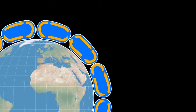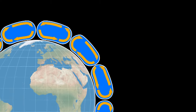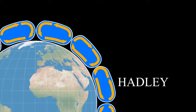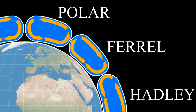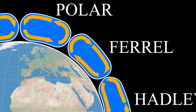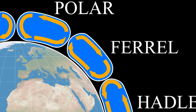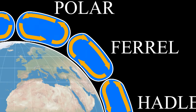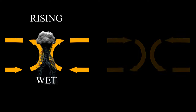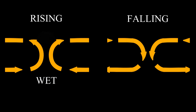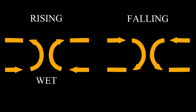We have three cells in each hemisphere: the Hadley cell, the Ferrell cell, and the polar cell. Between each cell, we have air that's either rising or falling. When air rises, it expands and it cools and you get rain. When air falls, the opposite happens — it comes down as very dry air.